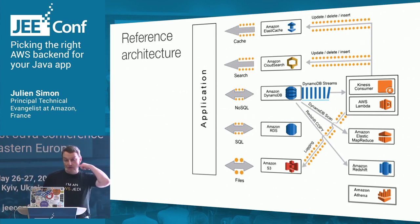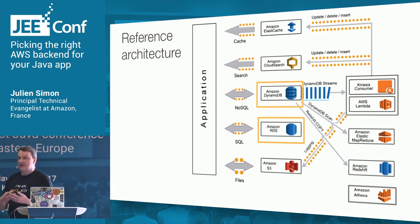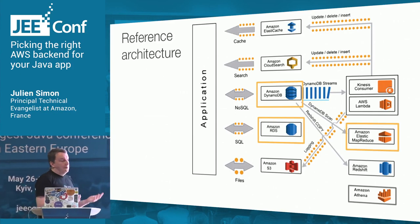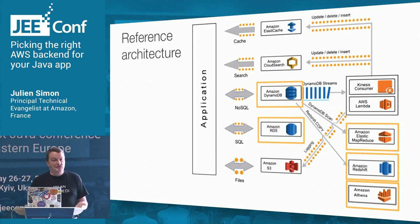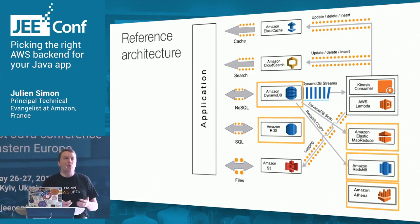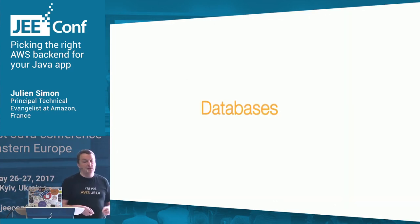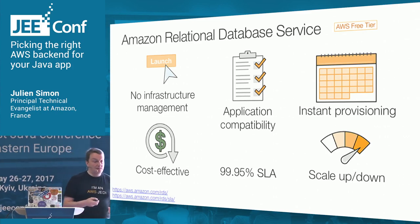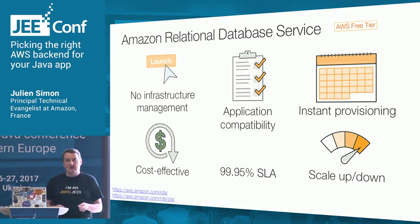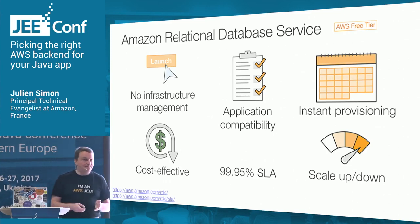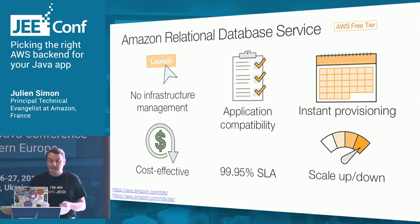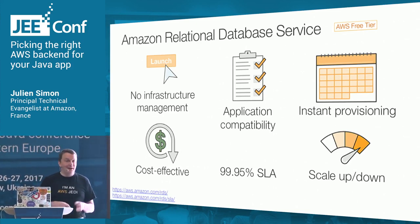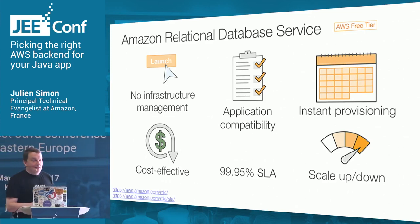Here's our reference architecture for backends. Data comes in many shapes, sizes, and throughputs, so we need different backends. We have a first line for storing data — ElastiCache, CloudSearch, DynamoDB, RDS, and S3 — to adapt to different shapes. Then a second line with analytics services like Lambda, MapReduce, and Redshift. Today I'll talk about RDS, DynamoDB, Hive, Redshift, and Athena for analytics.